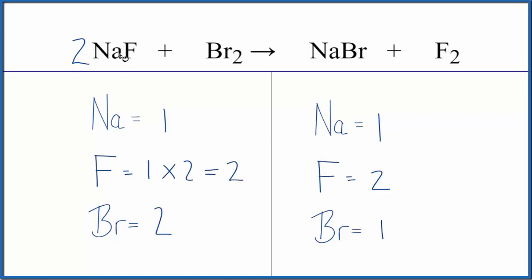Might as well balance the sodium. If we put a 2 here as our coefficient, one times two, now we have two sodium atoms, those are balanced. The two goes to everything, one times two that gives us two bromine atoms, which is nice because this equation is balanced.